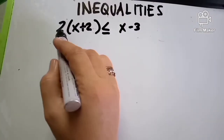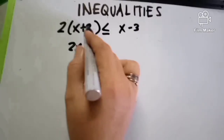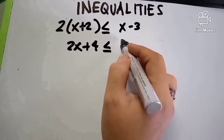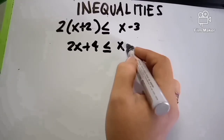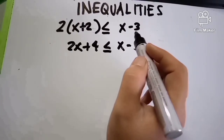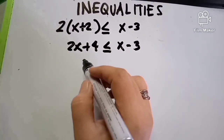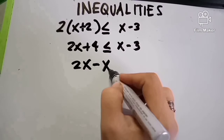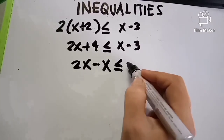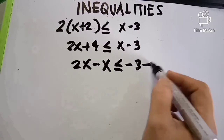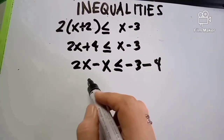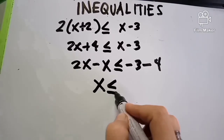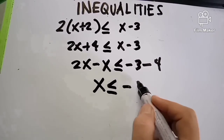We distribute first. 2 times X is 2X, and 2 times 2 is 4. So we have 2X plus 4, less than or equal to X minus 3. Transposing: 2X minus X is X, and transposing positive 4 gives negative 4, so negative 3 minus 4 equals negative 7. Therefore X less than or equal to negative 7.